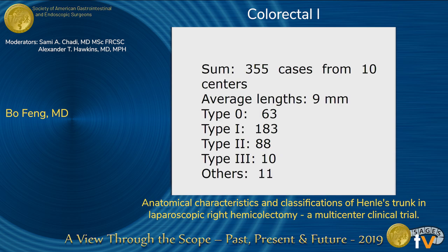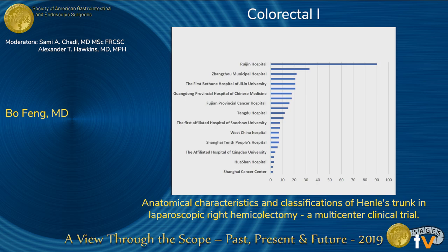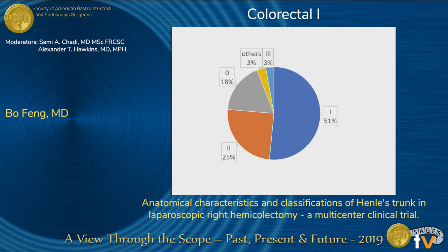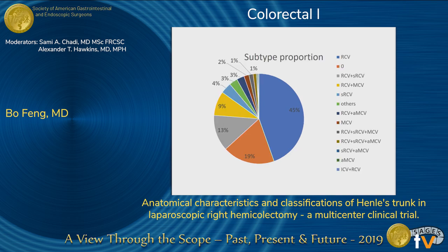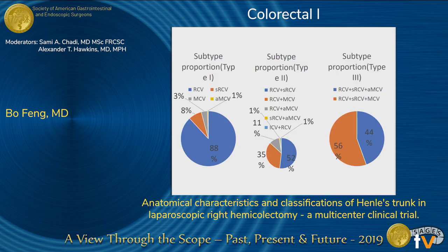Interestingly, there were 11 other kind of types. Most of the cases are type 1, comprising almost half of the study, and type 2 accounts for around a quarter. As we can see, most of the anatomical characteristics show only one vessel — the right colonic vein — at around 45%.